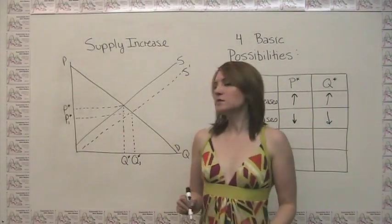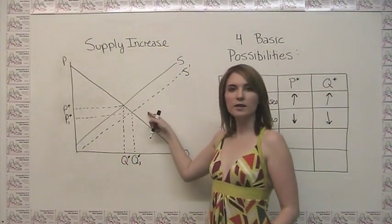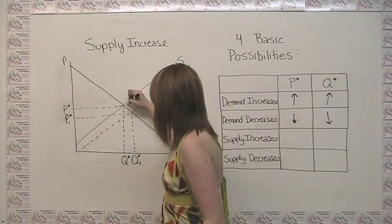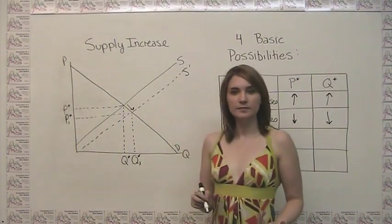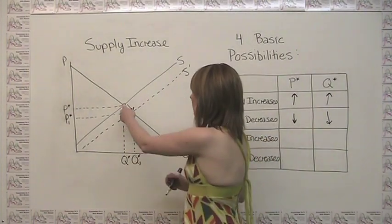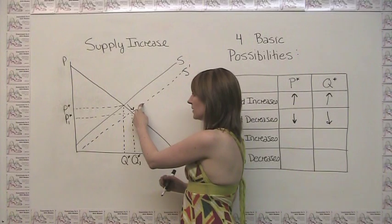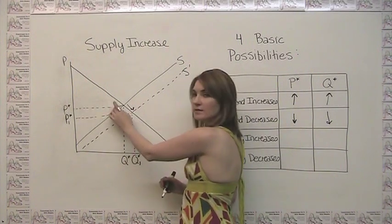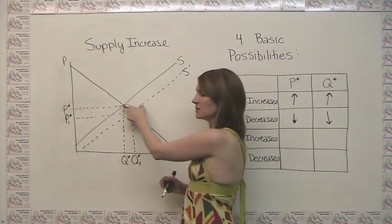So now you see when we have an increase in supply that our equilibrium moves down to the right. Again, we can think of how this actually happens. Well, when we have an increase in supply, at the old price, we have a surplus.